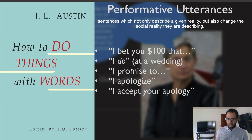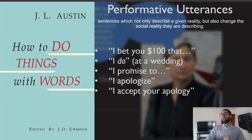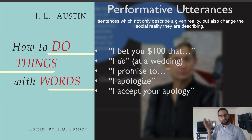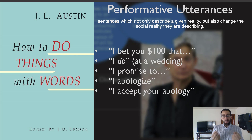This might seem banal and ordinary, but keep in mind that Austin is trying to show us that language isn't just a describing thing. Sentences like 'the cat is on the mat' do the kind of thing that we usually associate with language — describe things in the world. But Austin is trying to show us that there's another kind of speech act that doesn't describe but performs, or rather brings into existence the very thing that it seems to describe. 'I promise to.'